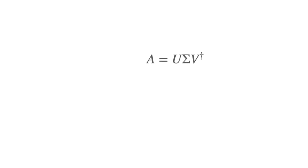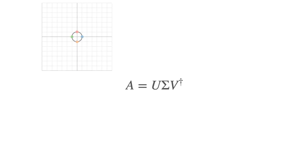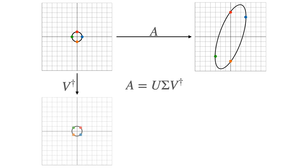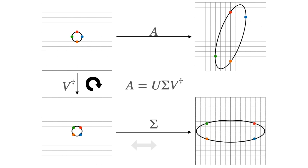We can summarize everything in this graph. Our original transformation A turned the unit circle into an ellipse. That can be summarized as one rotation V†, then two scalings σ — one horizontal and one vertical — and finally another rotation U. This encompasses the equation in the middle: A = U Σ V†.